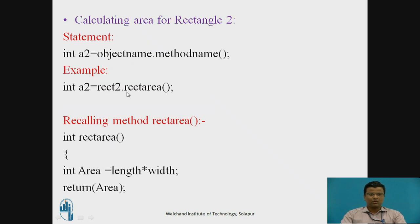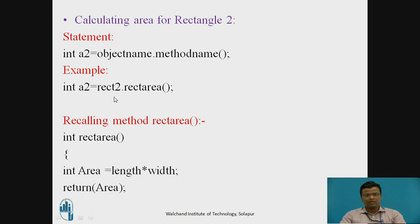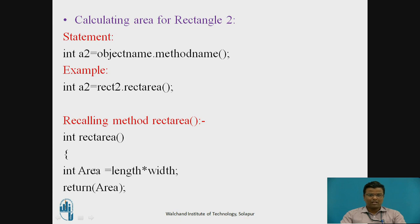For the second method, we recall the rectArea method. We can directly store the area for rectangle two in the A2 variable: int A2 = rect2.rectArea, where rect2 is the object name for the second rectangle and rectArea is the method we declared already. The values will be stored in length and width, and the calculated area for rectangle two will be stored in A2.